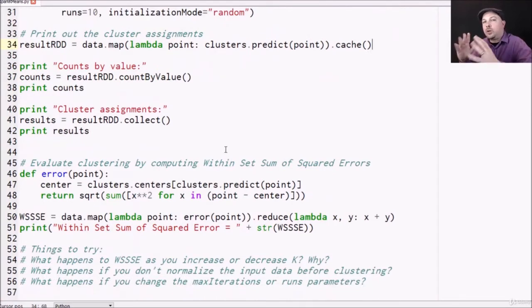Now, how do we measure how good our clusters are? Well, one metric for that is called the within set sum of squared errors. Wow, that sounds fancy. It's such a big term, we need an abbreviation for it, WSSSE.